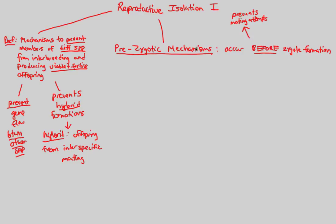Even if a mating attempt does occur, the overarching goal of prezygotic isolation mechanisms is to prevent fertilization. A lot of the time, that means preventing mating attempts altogether, because you cannot have fertilization of egg and sperm if there is no mating attempt at all. These examples are very applicable and make a lot of sense when we study them.